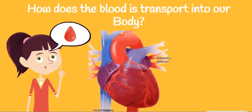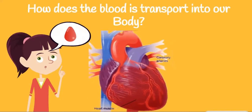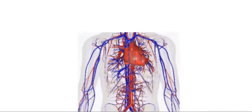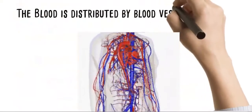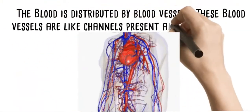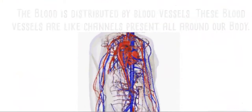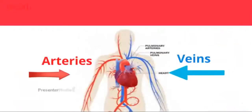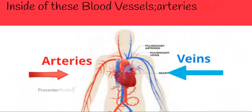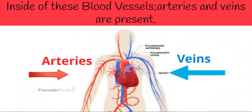Did you ever wonder how the blood is transported into our body? The blood is distributed by blood vessels. These blood vessels are like channels present all around our body. Inside of these blood vessels, arteries and veins are present.